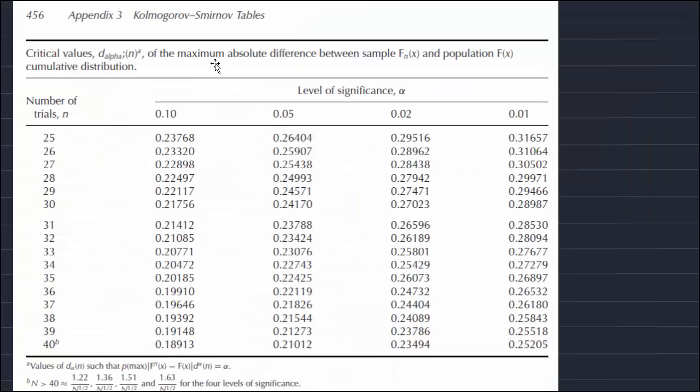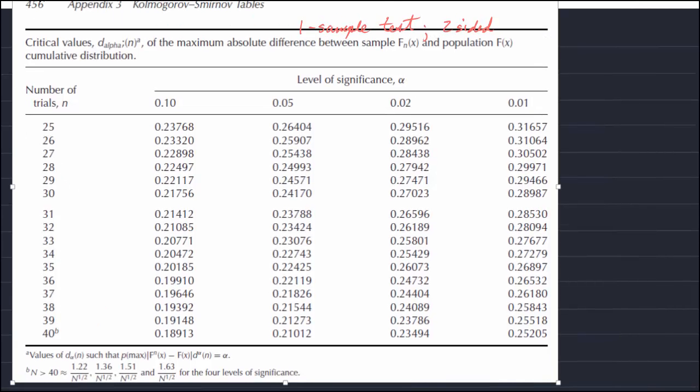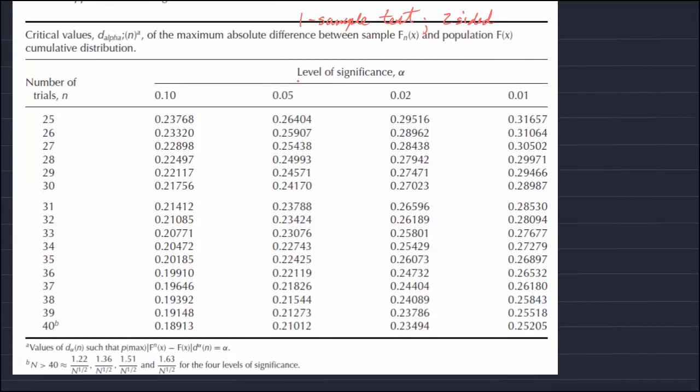And so, we inspect our KS table. And this is a KS table for a one-sample test. And it's a two-sided test. And so, this table gives numbers, sample sizes up to 40. But for values greater than 40, we use, right, so we're working at the, looking at the 5% significance level.